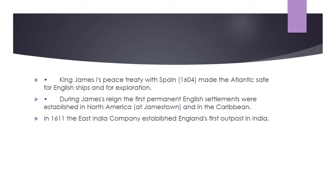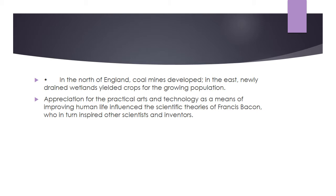King James I's peace treaty with Spain in 1604 made the Atlantic safe for English ships and for exploration. During James's reign, the first permanent English settlements were established in North America at Jamestown and in the Caribbean. In 1611, the East India Company established England's first outpost in India. In the north of England, coal mines developed, and in the east, newly drained wetlands yielded crops for the growing population.